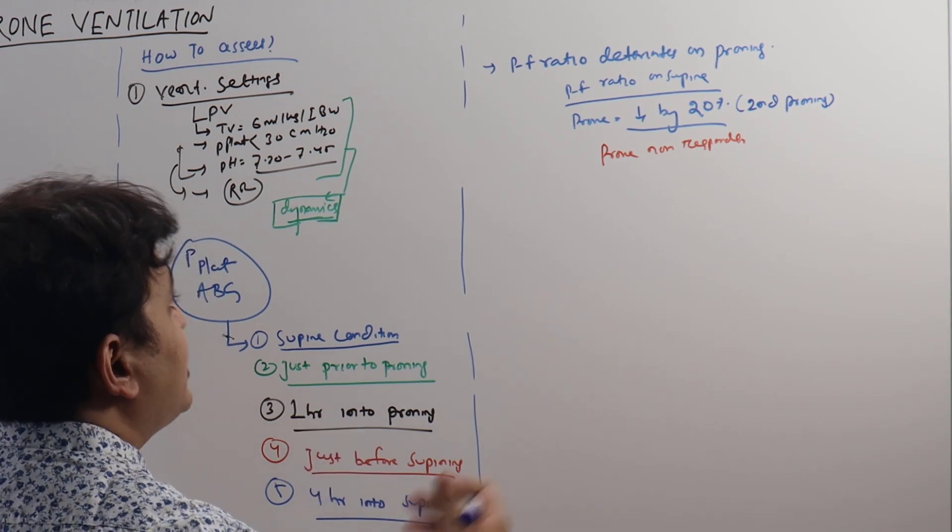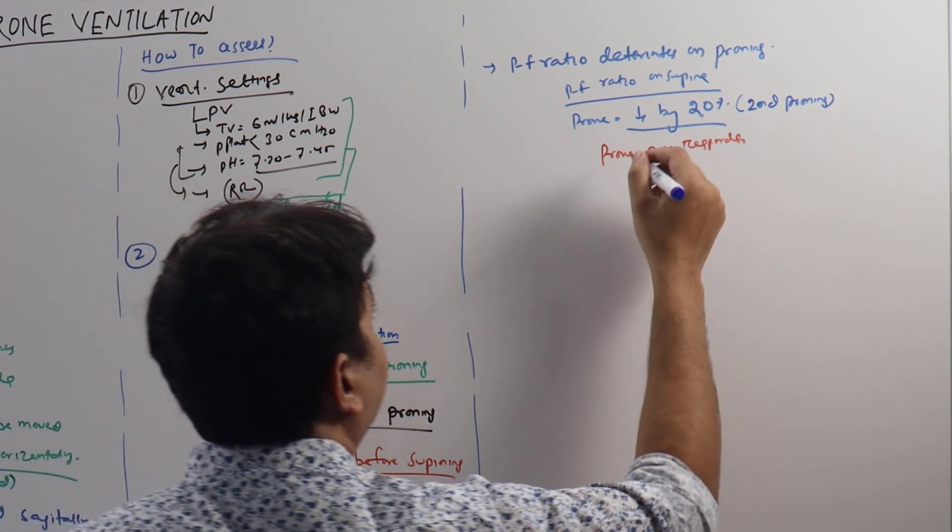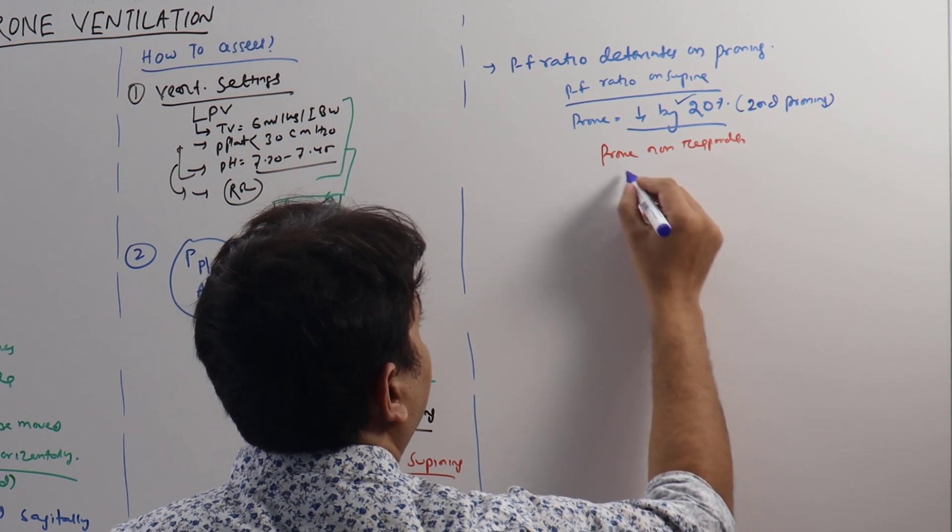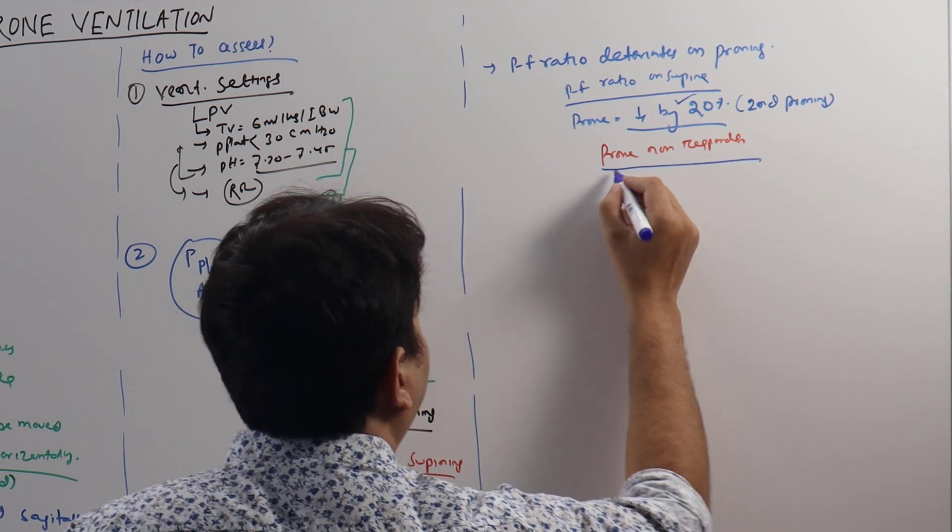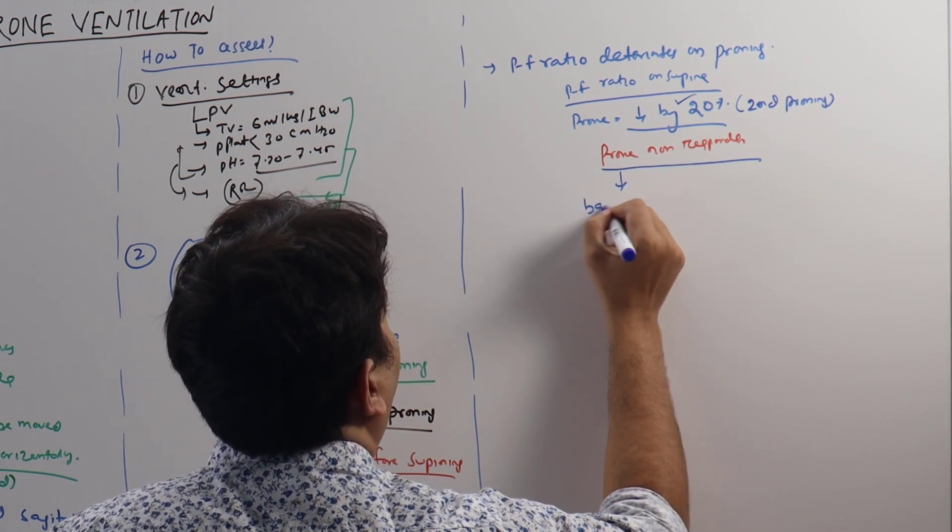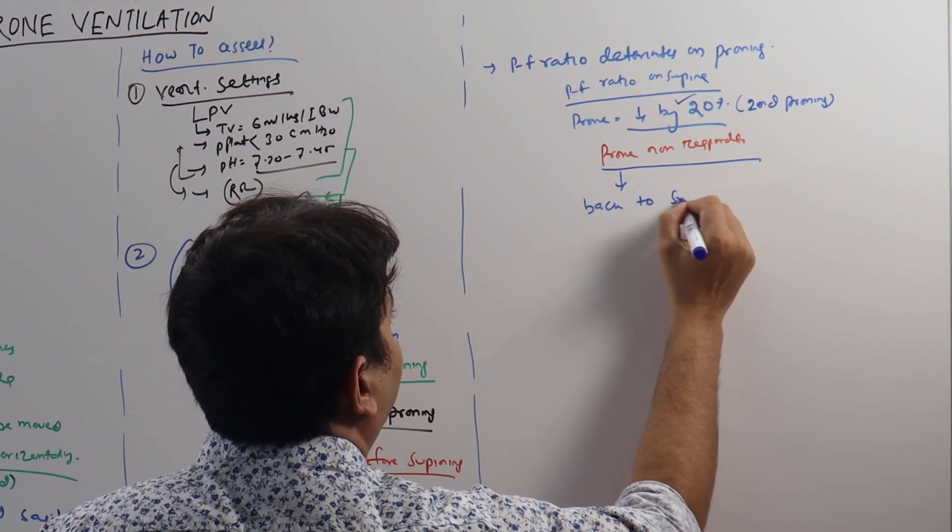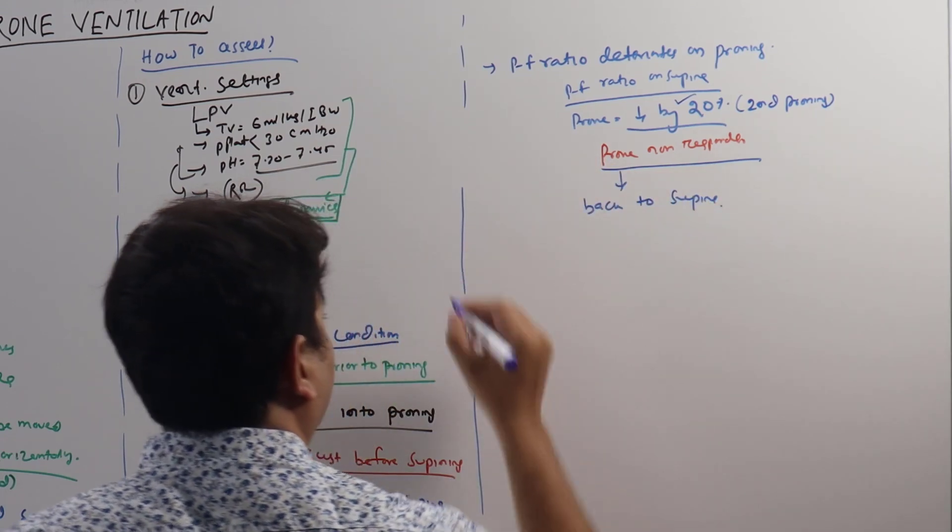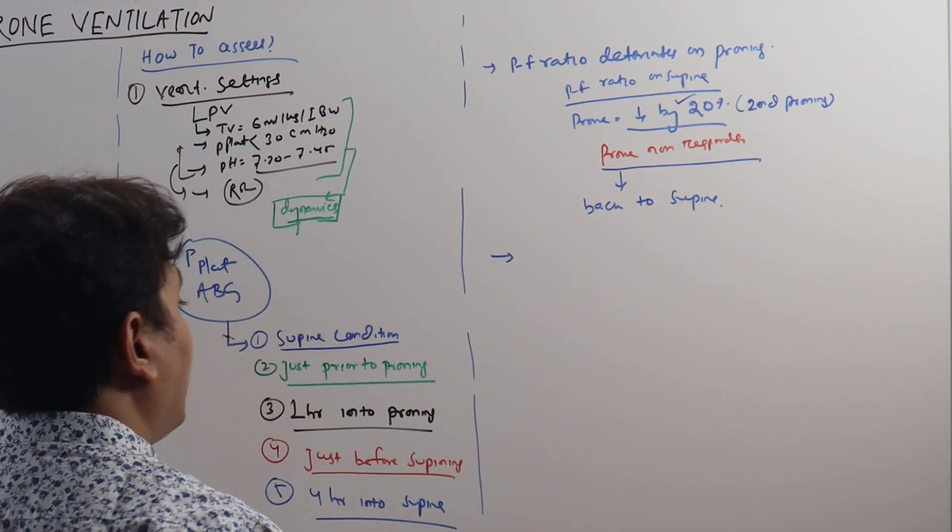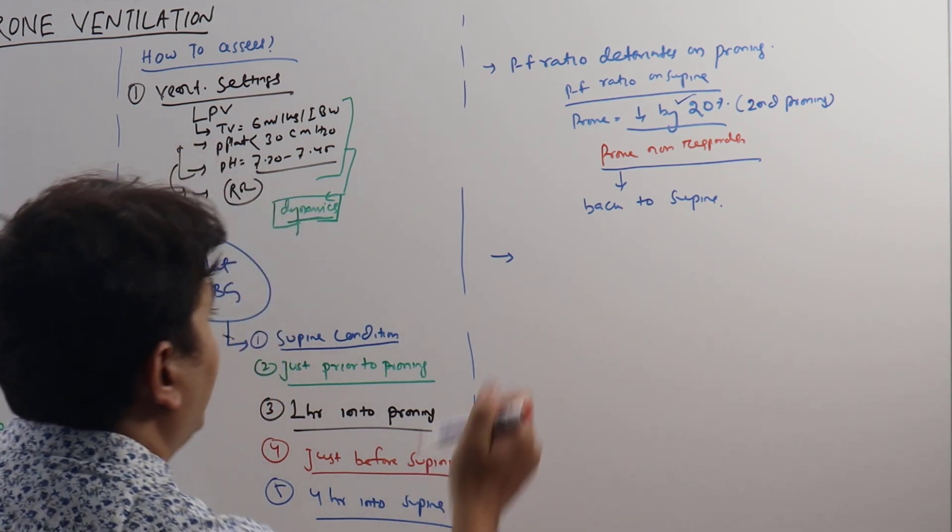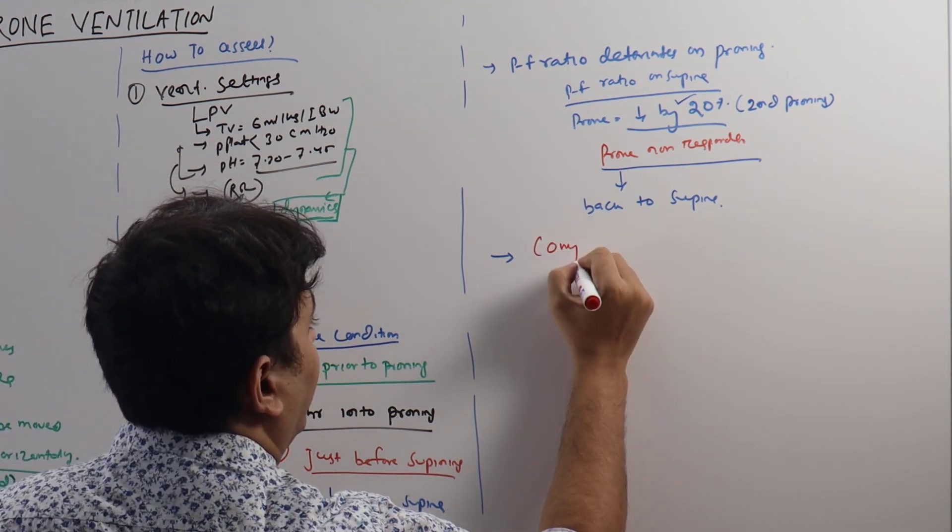In the second time when the person is proned, if the PF ratio decreases by 20 percent, these are prone non-responders. They are back to supine and prognosis is worse. Third: when to stop proning when there is complication.